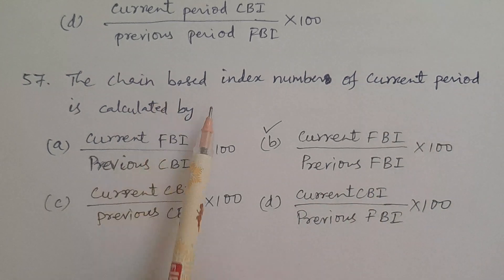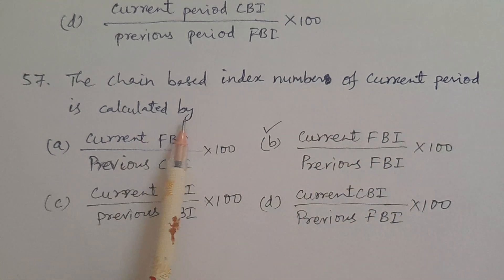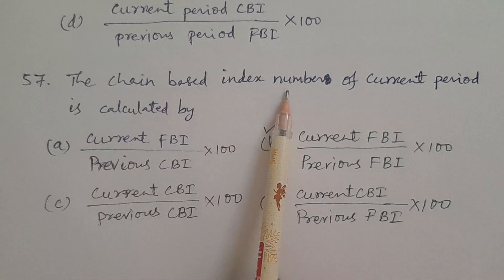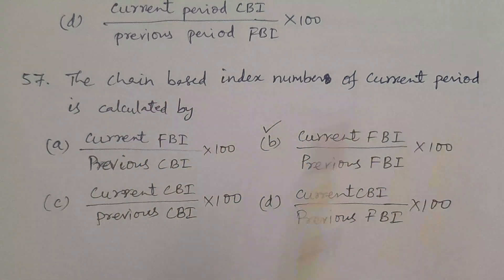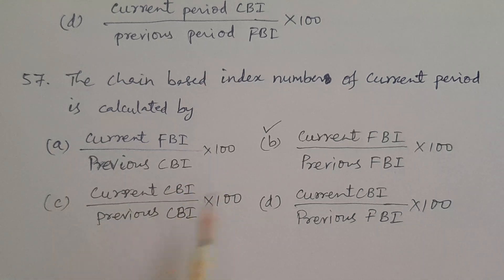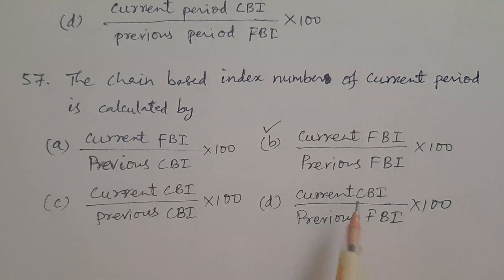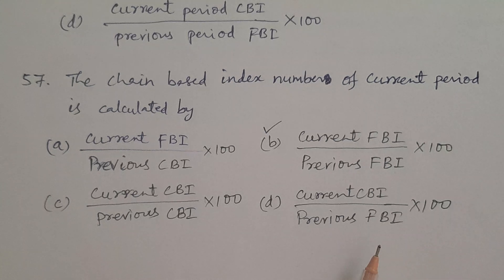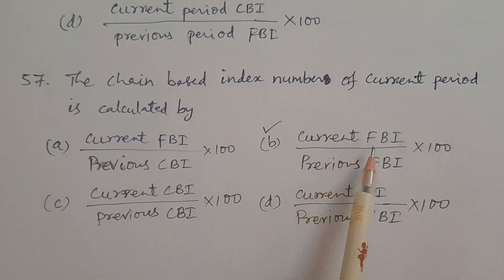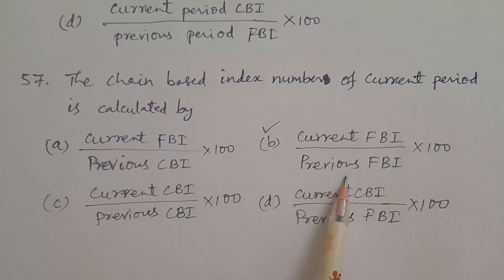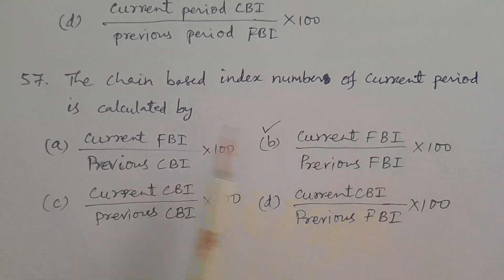In Telugu: the chain based index number of the current period is calculated by — the current period CBI equals current FBI divided by previous FBI into 100. The correct answer is B: current FBI divided by previous FBI into 100, i.e., current period fixed base index number divided by previous period fixed base index number into 100. This formula is used to calculate the chain base index number for the current period.